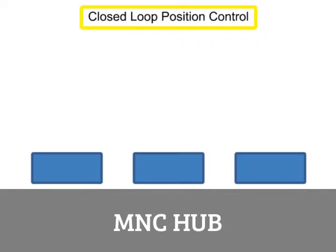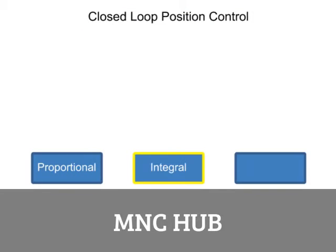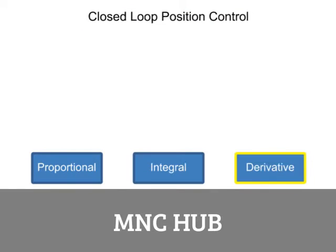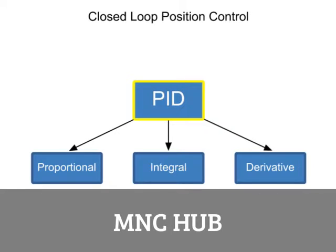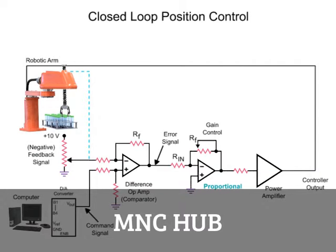A closed-loop control system for position control is comprised of proportional, integral, and derivative circuits, and is often referred to as a PID. The operation of PID mode control is demonstrated in the following robot arm position circuit.